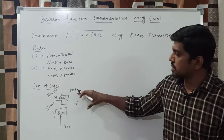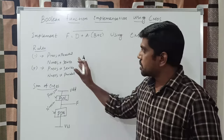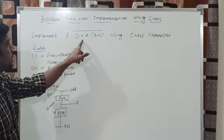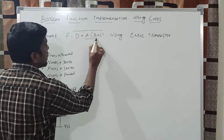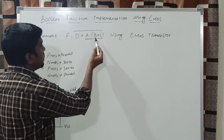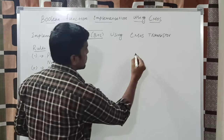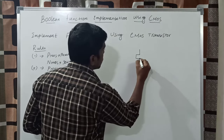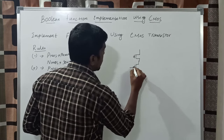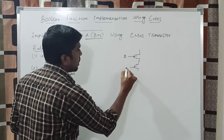It is the basic structure of CMOS, and these two rules we use to solve the problem. Based on that, we solve the equation F equal to D plus A dot B plus C. First, we take the sub-expression B plus C. Here we use the plus operation, so PMOS connects in series — two PMOS transistors connecting in series with inputs B and C.